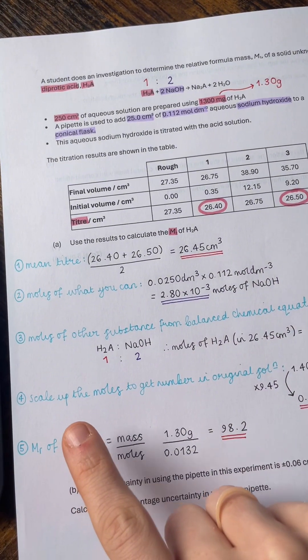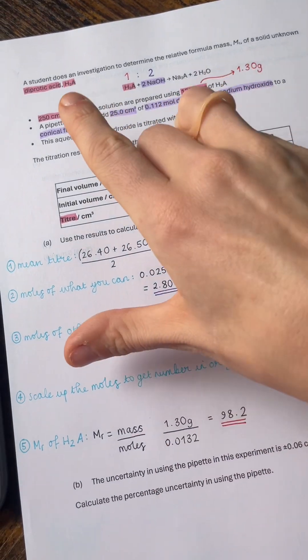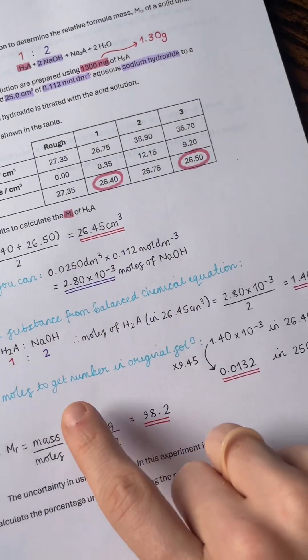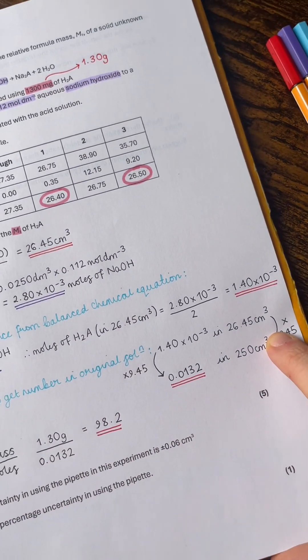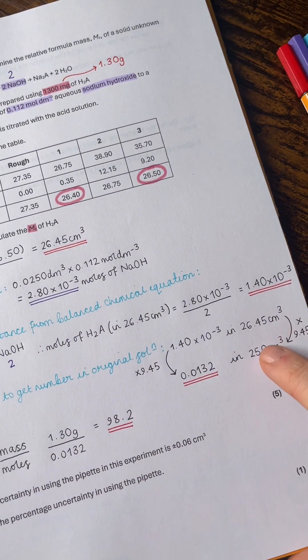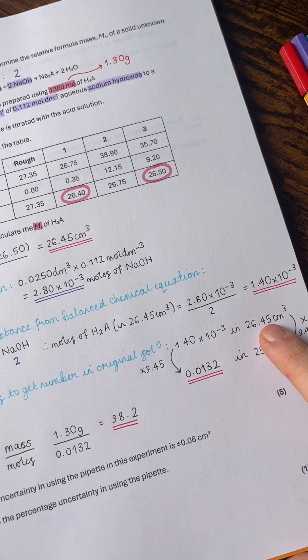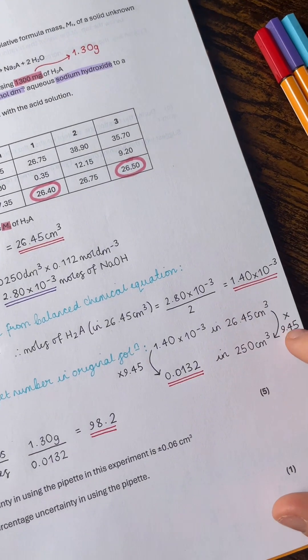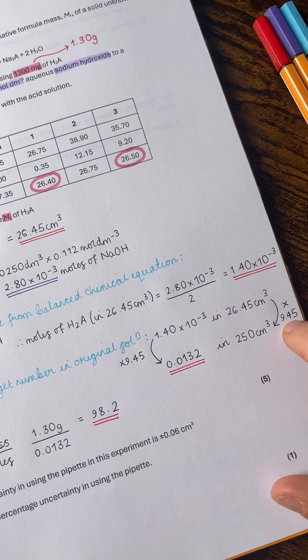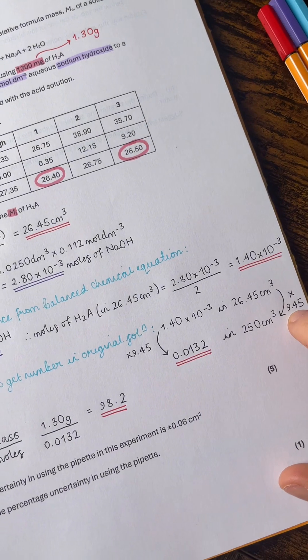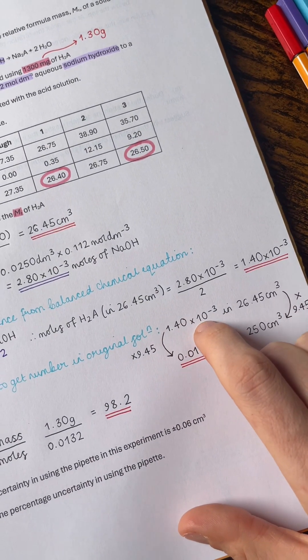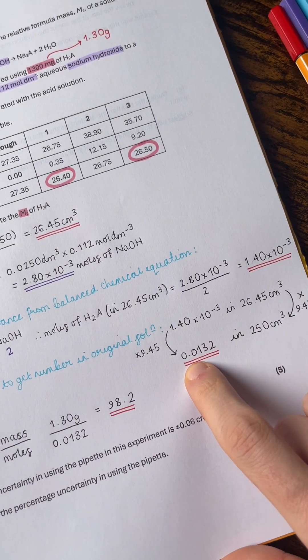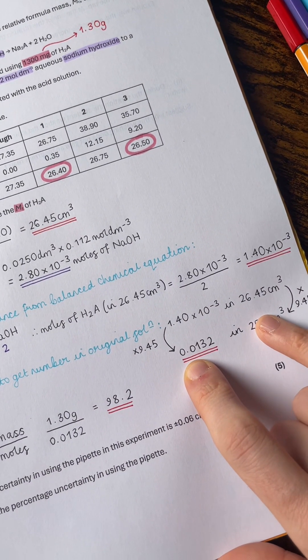And then the fourth step is to scale up the moles to get the number in the original solution. And we made up 250 cm³ initially. So this is why this isn't quite so nice, because if we were to put the H2A into the conical flask, it would measure 25 cm³, and that's a nice times by 10 scale factor. Here it comes out as 9.45 to three significant figures. So I then times the 1.40 × 10⁻³ moles by that scale factor to get 0.0132 moles in the original solution.